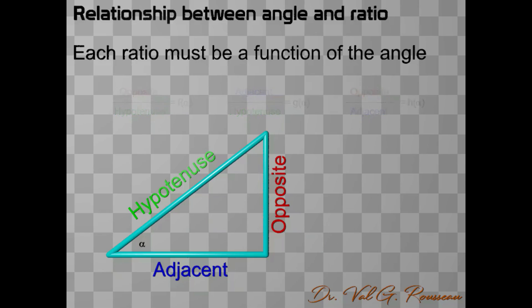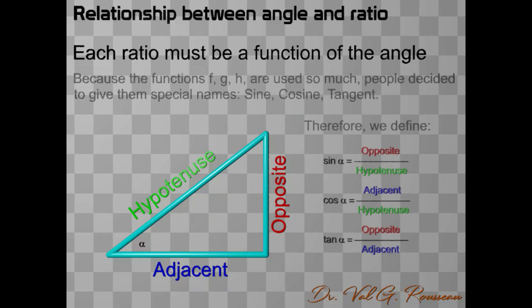Now, we are ready to define the trigonometric functions. The point is that the functions f, g, and h are so important and use so much that people decided to give them special names. As a result, we define the sine of the angle alpha as the ratio opposite over hypotenuse. The cosine of alpha is defined as the ratio adjacent over hypotenuse, and the tangent of alpha is defined as the ratio opposite over adjacent.